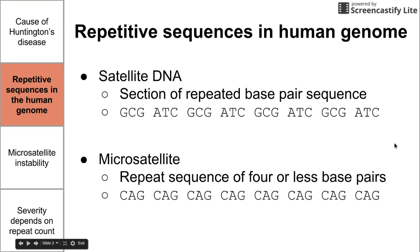Before we talk about what exactly causes the disease, we need to establish that there are repetitive sequences in the human genome. A small fraction of the human genome actually codes for proteins. A lot of it is repetitive sequences that are used for several things, such as DNA fingerprinting.